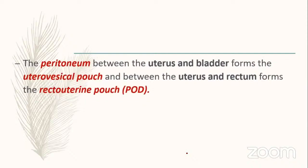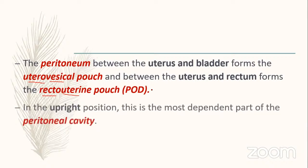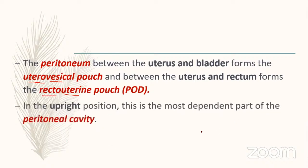The peritoneum between the uterus and bladder forms the uterovesical pouch. Between the uterus and rectum it forms the recto-uterine pouch — the pouch of Douglas. In the upright position, the pouch of Douglas is the most dependent part of the peritoneal cavity. In the supine position, it is the most dependent part of the pelvic cavity.